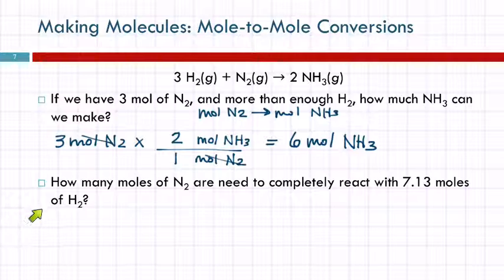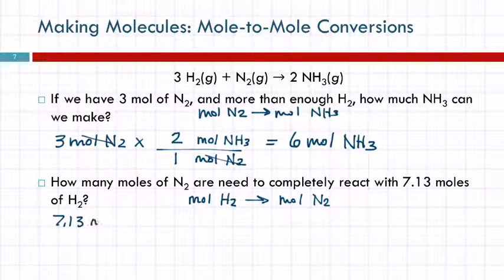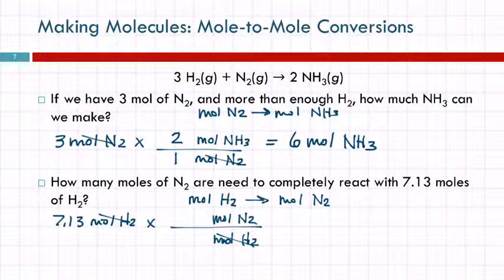How many moles of nitrogen are needed to completely react with 7.13 moles of hydrogen? This sort of a number, 7.13, this is going to be a little harder to just kind of do in your head. Well, what's our path? What are we starting with? Moles of hydrogen. And what do we want to know? Moles of nitrogen. So that tells us what to do with our units. We have 7.13 moles of hydrogen. And my path has one arrow. And it's going to moles of nitrogen. So I put that in the numerator. And I'm going to put moles of hydrogen in the denominator because I want those to cancel out.